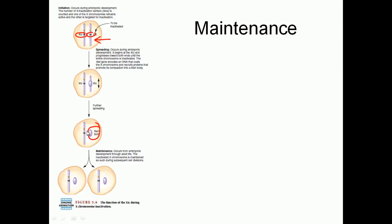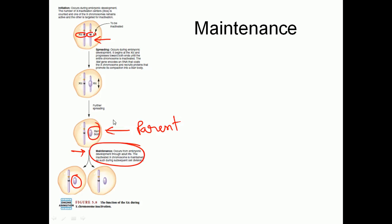Maintenance is carried because at the very beginning random inactivation occurs, but after that, from every single parent cell, every daughter cell will always keep that Barr body in place and keep the other chromosome active. It will never happen that the Barr body chromosome gets activated and the active one becomes a Barr body. The replication of the Barr body is also slightly different from general chromosome replication, because many condenser proteins are present. We need to remove them prior to accessing the DNA, then replication is done, and upon completion that chromosome is again repacked as a Barr body.